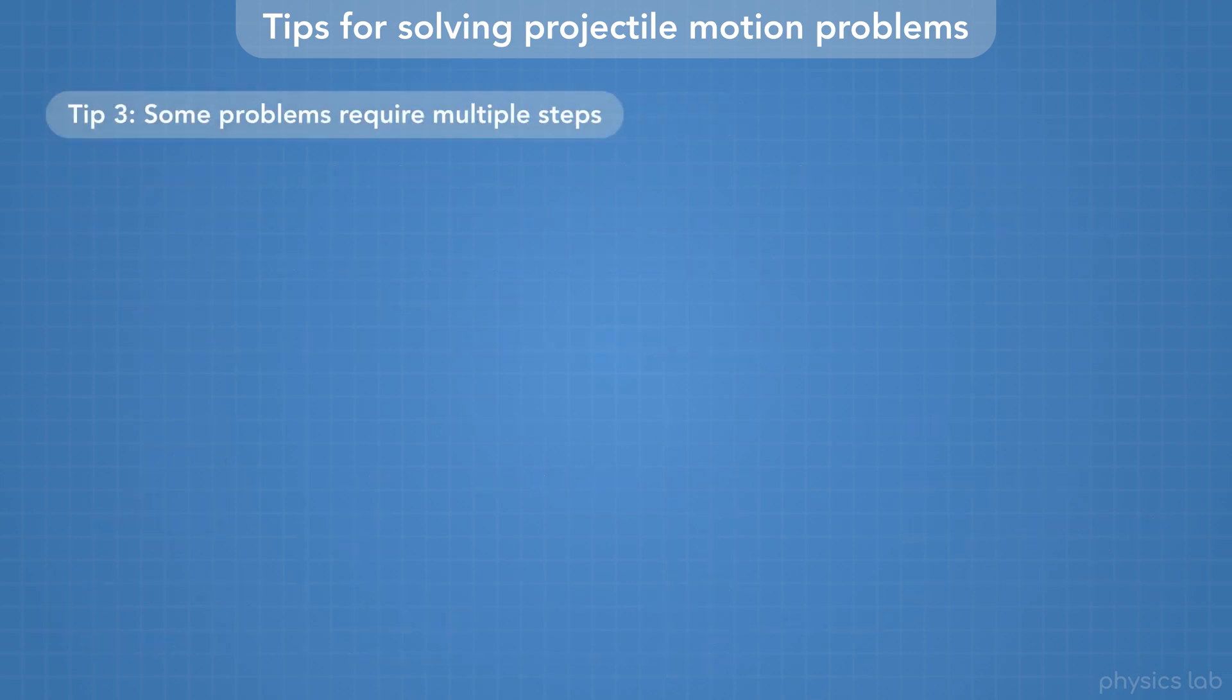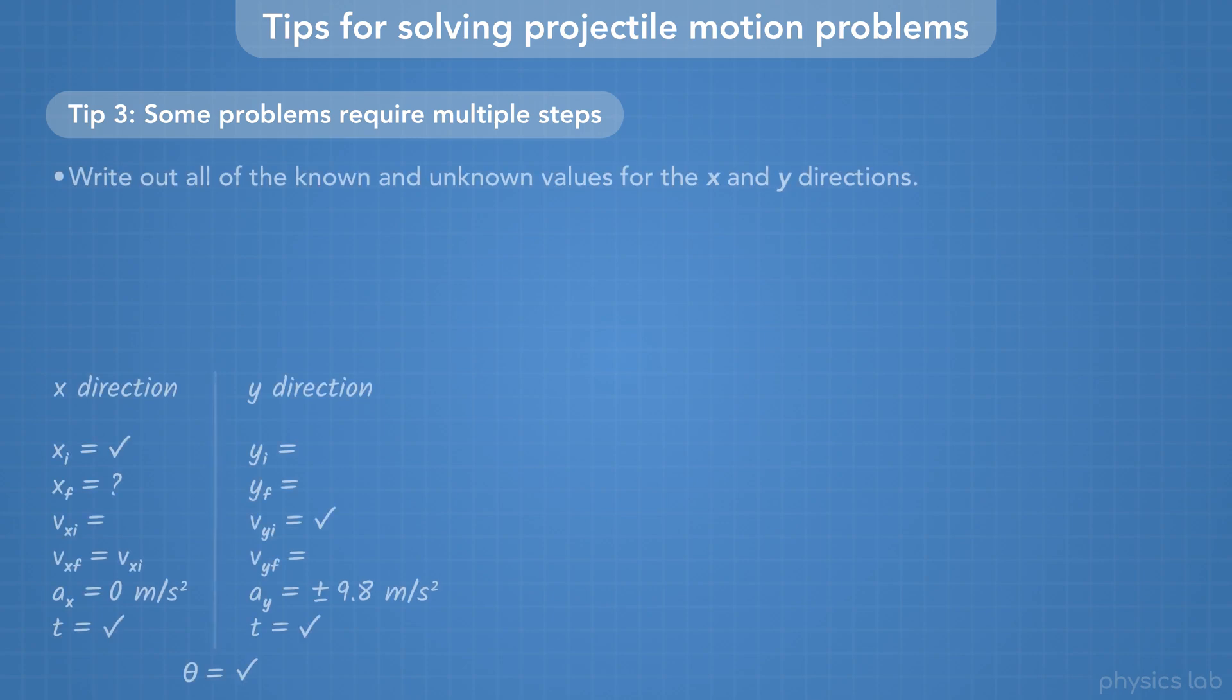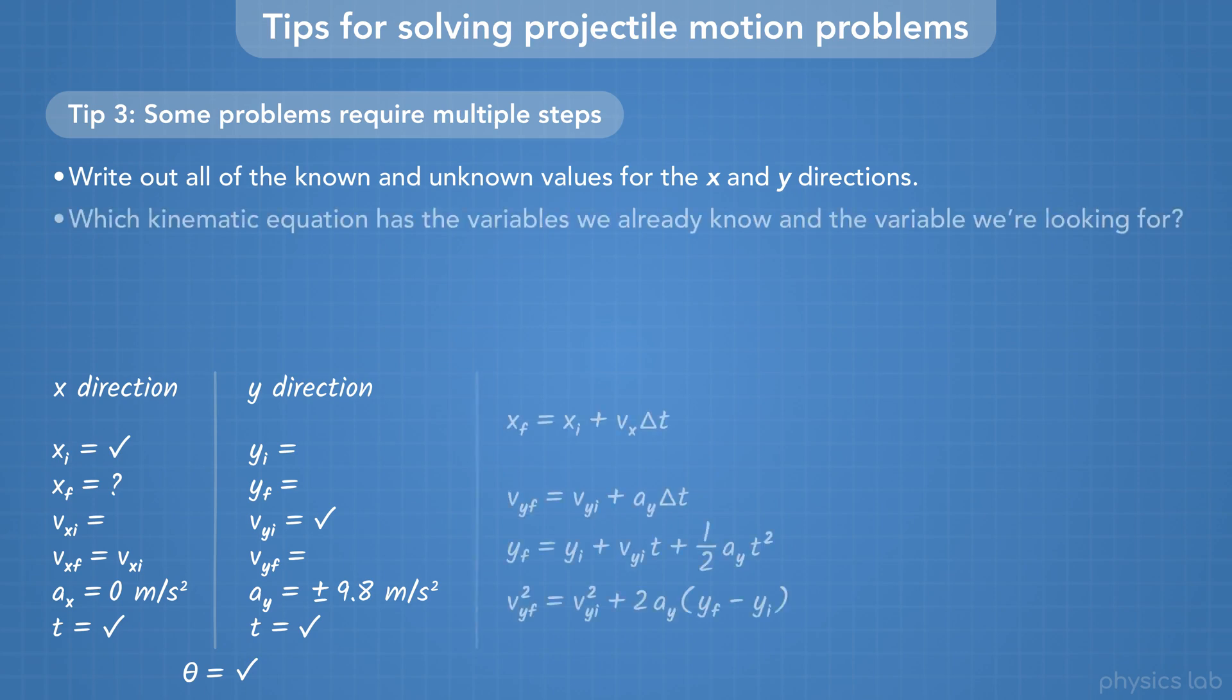And tip number 3, some problems require multiple steps. This applies to any physics topic, but when starting a problem, write out all the known and unknown values for the X and Y directions. Then we can look through the list of equations that apply, and ask ourselves which kinematic equation has the variables we already know, and the variable we're looking for.